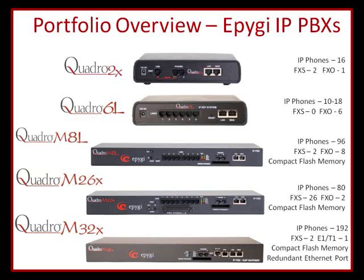Looking at your small remote office or home office situation, the Quadro 2X supports up to 16 IP phones. As you move through the lineup, you'll see variations of analog to IP phone capacities, and then all the way at the bottom the Quadro M32X, which is the larger product. That one has the compact flash slot, which will come into play with one of the features in just a moment.